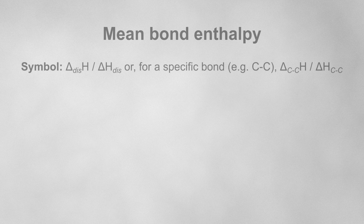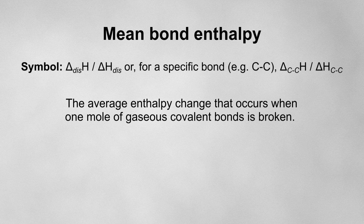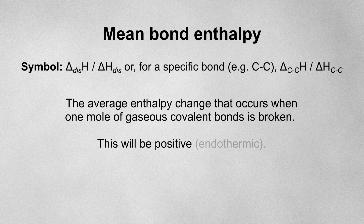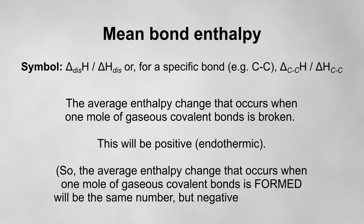We'll start with the mean bond enthalpy. This is the average enthalpy change that occurs when one mole of gaseous covalent bonds is broken. Since we're breaking the bonds, the enthalpy change will always be positive because breaking bonds requires energy, so it's endothermic. It follows that the average enthalpy change when one mole of gaseous covalent bonds is formed will be the same number, but negative, because making bonds releases energy, so it's exothermic.